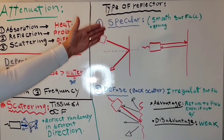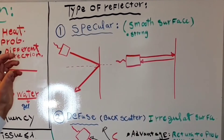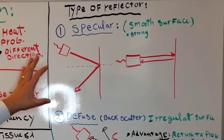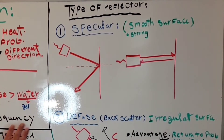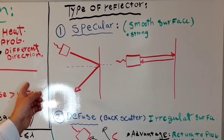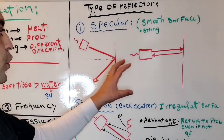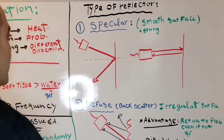Now we'll talk about the types of reflectors. We have two types: the specular reflector and the diffuse or backscatter reflector. The specular reflector has a very smooth surface — like a mirror or a whiteboard. That's why it is a very strong reflector, and you can see the light reflecting off the whiteboard right now. One advantage of the specular reflector is its very strong reflection.